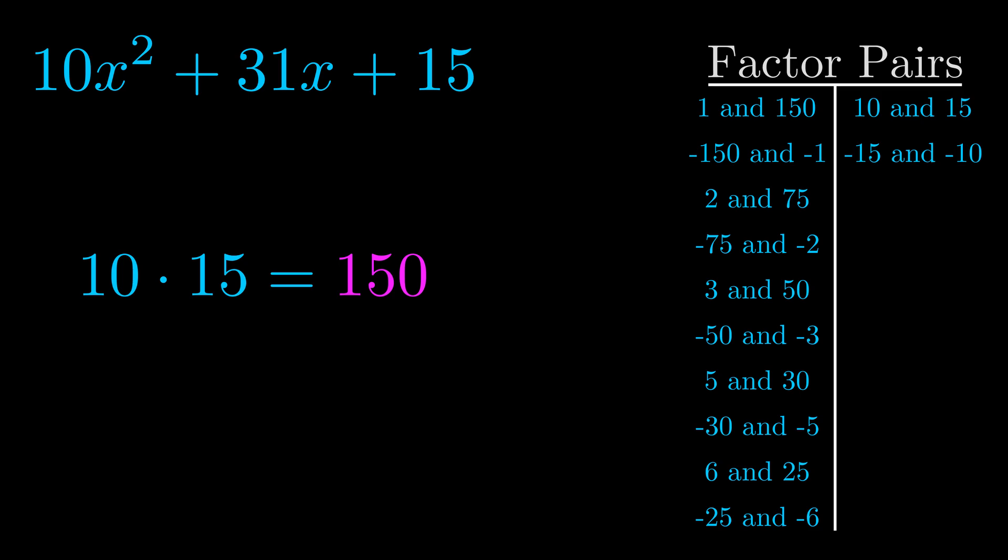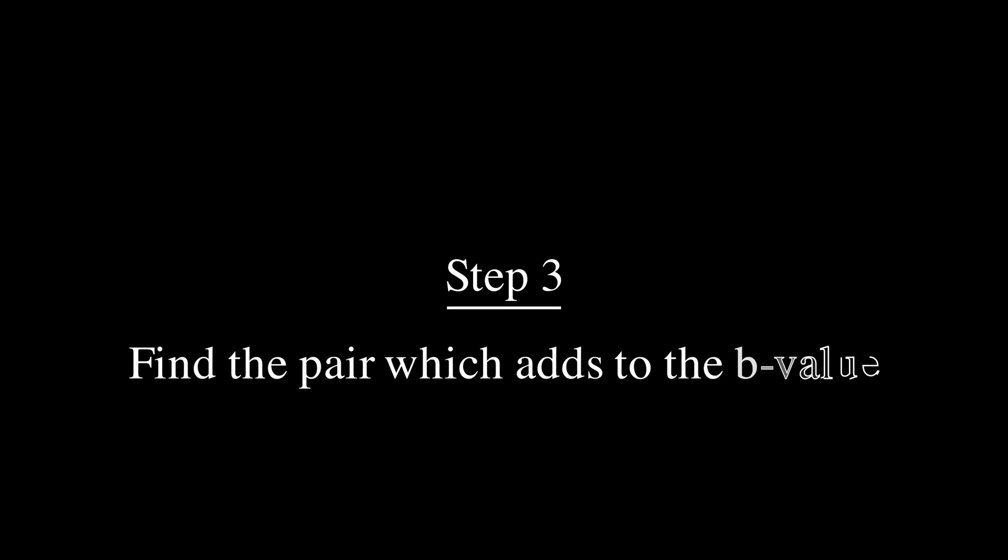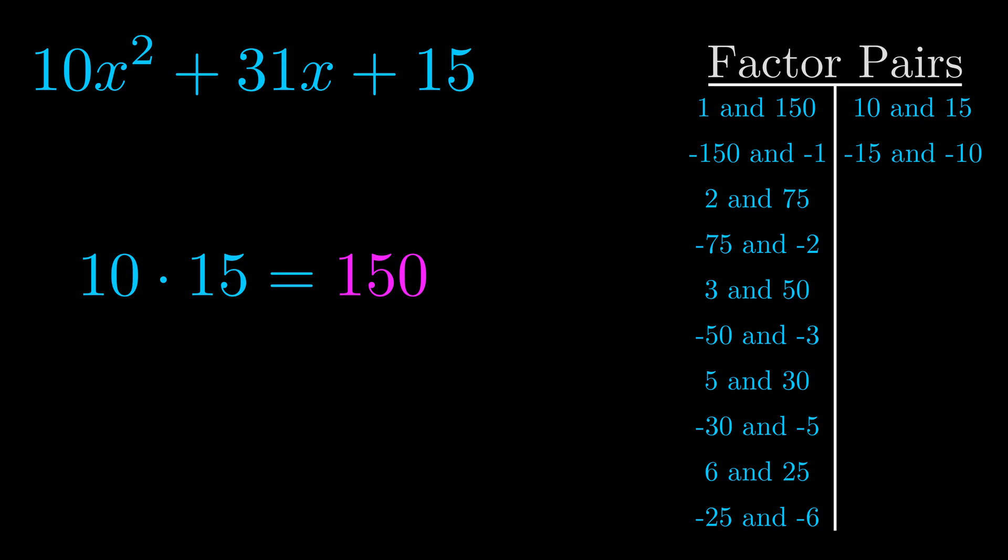Now once you have these factor pairs, the goal is to find which of these pairs adds to the b value. The b value is the coefficient on the x term. That's the middle term, the one that we haven't done anything with yet. And really this is the only factor pair that we need.